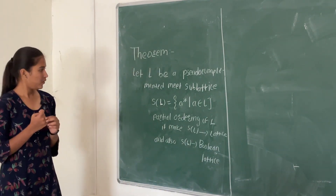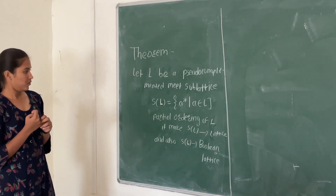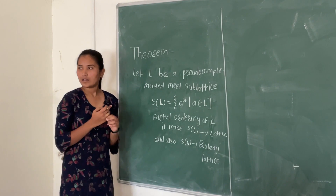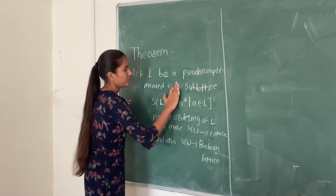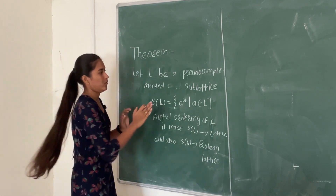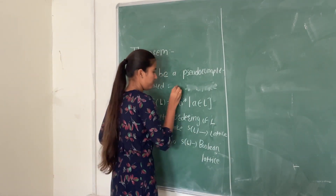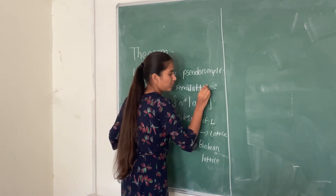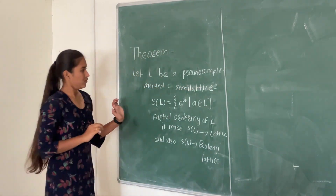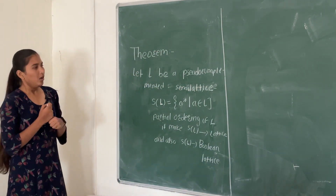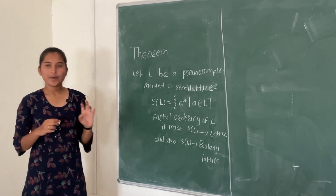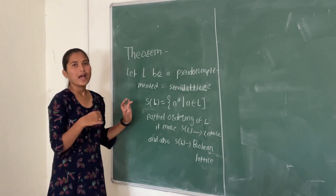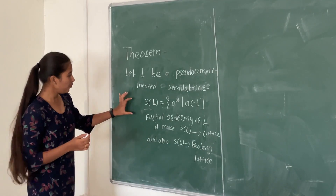Why did you write meet there? You do not require meet — it is a pseudo-complemented lattice. L is a pseudo-complemented lattice. Before going to prove this theorem, we require some properties of this set SL. I will first prove all these 6 properties and then using those properties, I will prove this theorem.